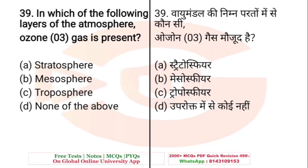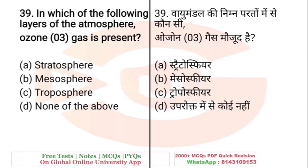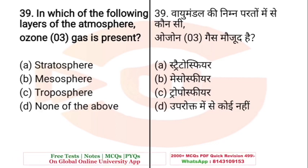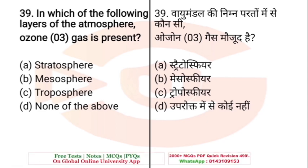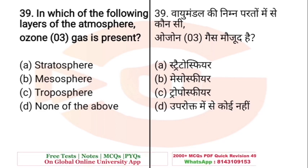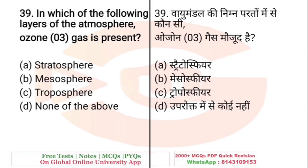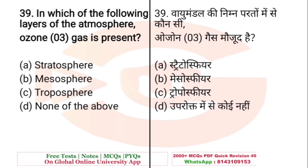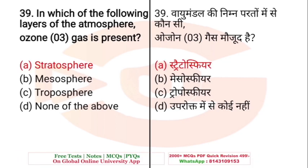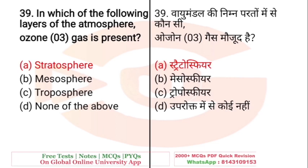Question: In which of the following layers of the atmosphere is ozone (O3) gas present? A. Stratosphere, B. Mesosphere, C. Troposphere, D. None of the above. The right answer is A — Stratosphere. Ozone layer gas is found in the Stratosphere.